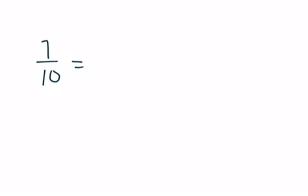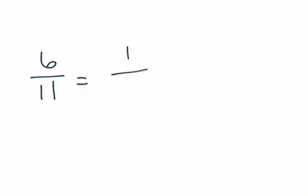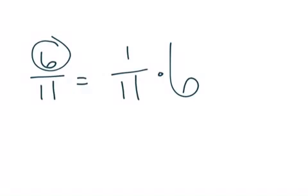So seven tenths would be one tenth, is my unit fraction, times seven pieces. Six elevenths would be one eleventh, is my unit fraction, and I have six pieces. So on and so forth.